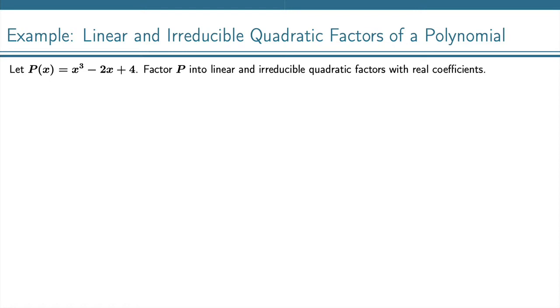To factor this we need to find some zeros, and it may not be super obvious right off the bat what our zeros are, so we're going to use the Rational Zeros Theorem to try and find some.